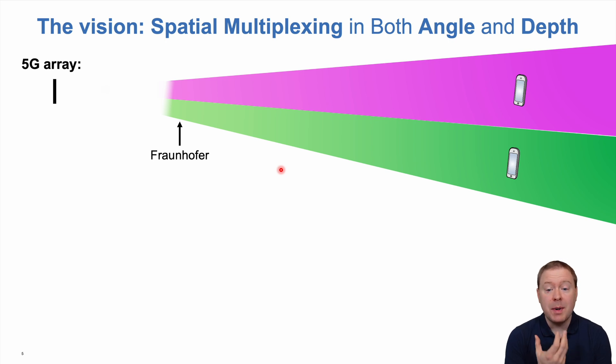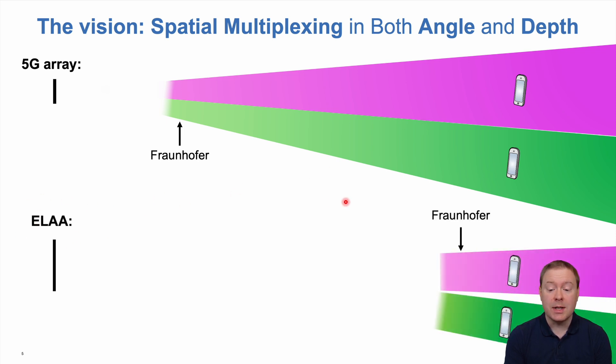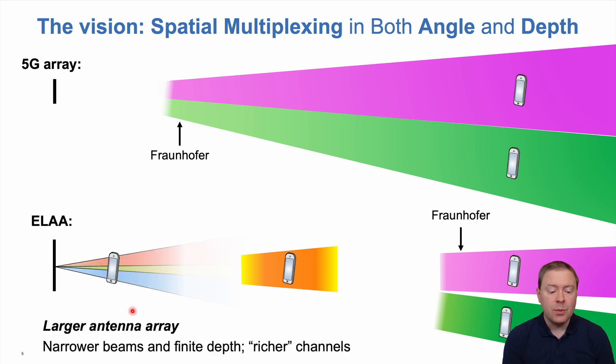For a typical 5G array, the beams start at the Fraunhofer distance divided by 10 and continue as angular beams towards users in the far field. If we make arrays much bigger, the Fraunhofer distance is bigger, so beams start further from the base station. We can potentially serve users at different distances in the same angle using beam focusing, allowing multiple signals at different distances and potentially to the same user. The channel becomes richer with both angle and depth information.